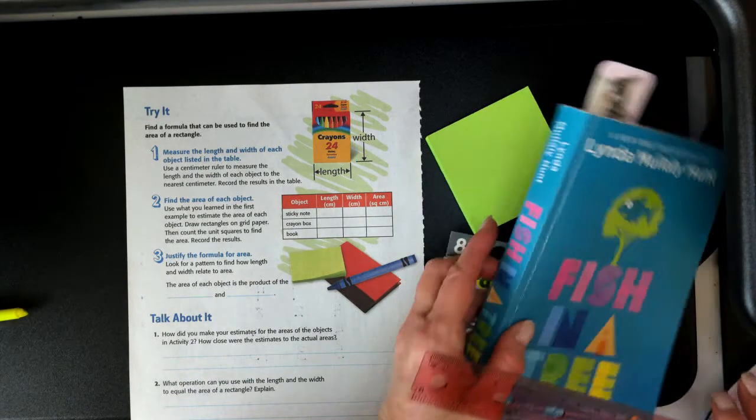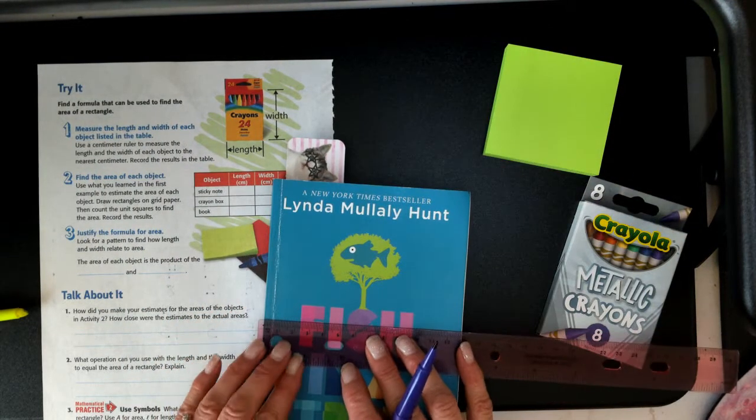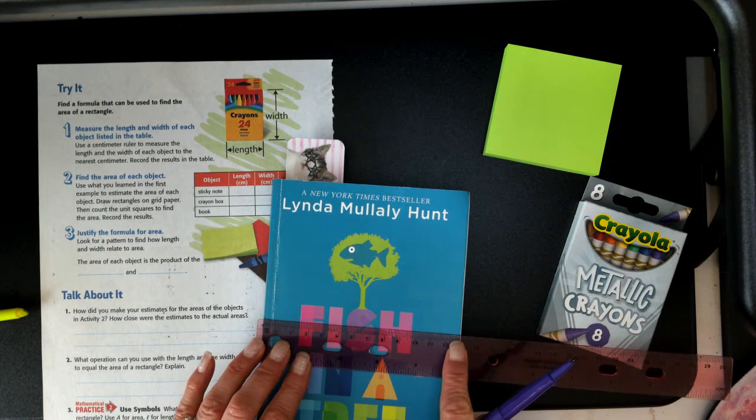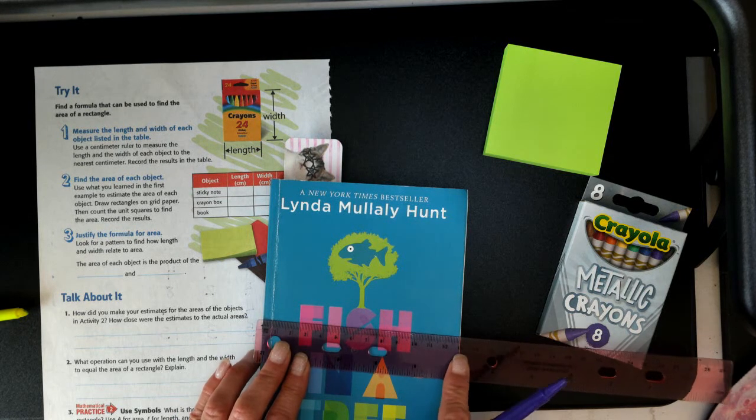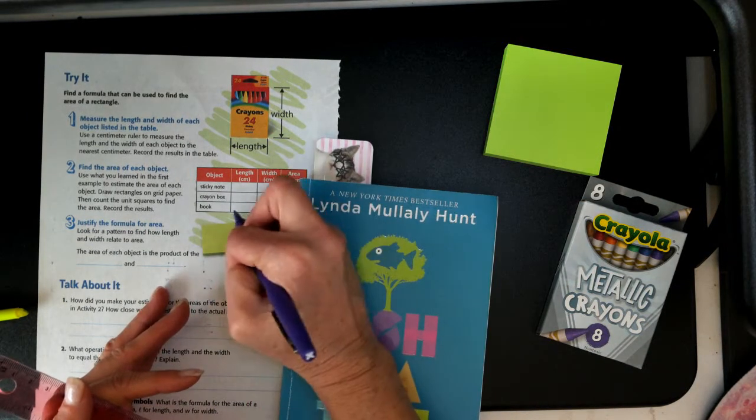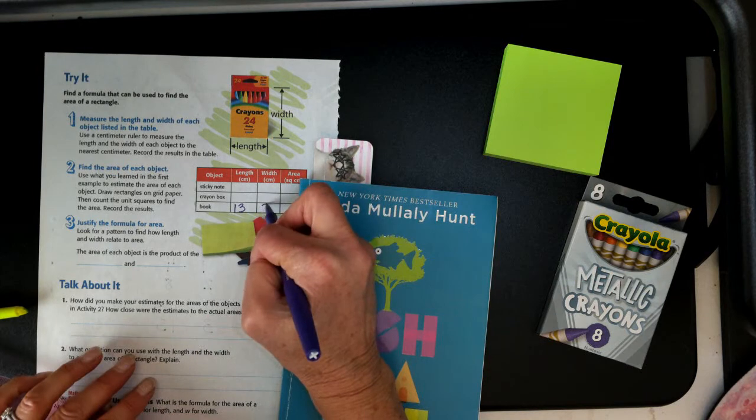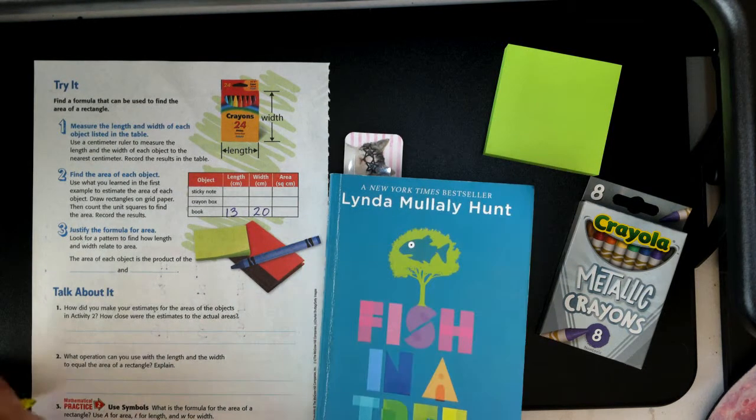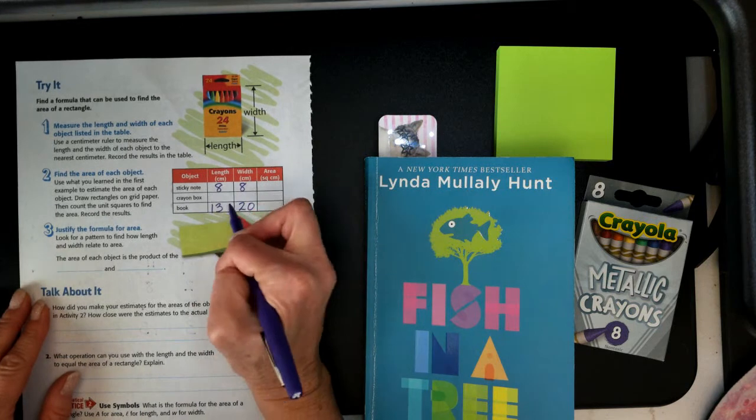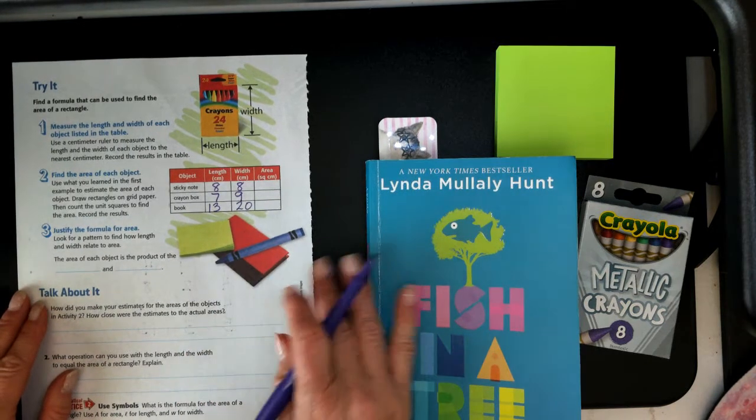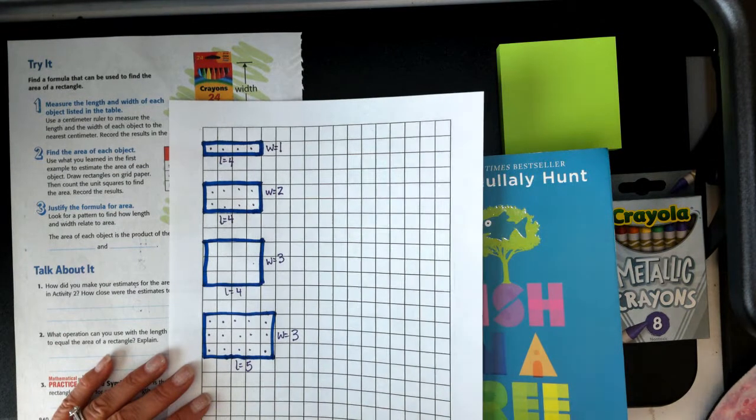I lined up my ruler on the centimeter side, and I measured the length, and this was about thirteen. I had to round some because they were closer to the next number. So this one was thirteen. That's my length. And my width was twenty. You're going to go ahead and measure yours, but in the interest of time, I'm just going to write mine in really quick because I had already measured. I can draw these on my paper, on my grid paper.